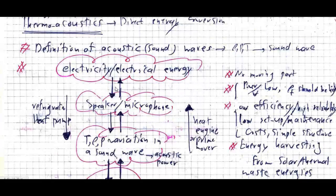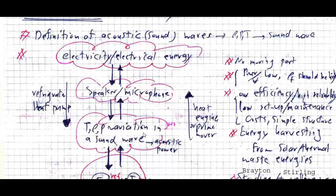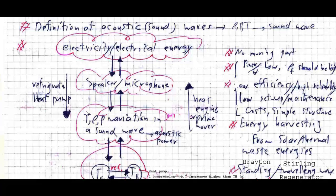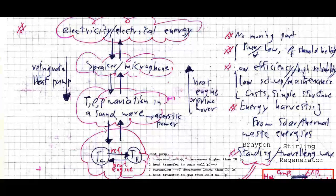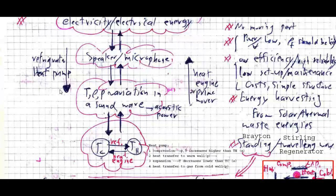The basic concept is to convert the temperature difference — the thermal energy injected into the system — into electrical energy output. This process from thermal to electrical is called the heat engine or prime mover. The reverse process is to use electrical energy to pump heat from a cold reservoir to a hot reservoir, which is called the refrigerator or heat pump.